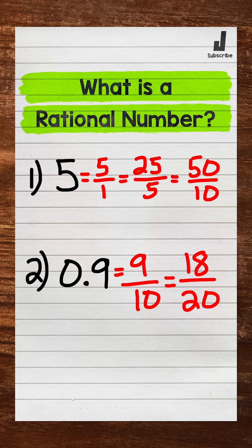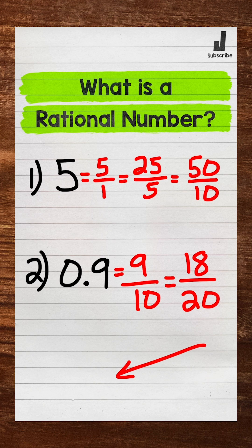0.9 is a rational number. Click here for a more detailed explanation. Until next time, peace.